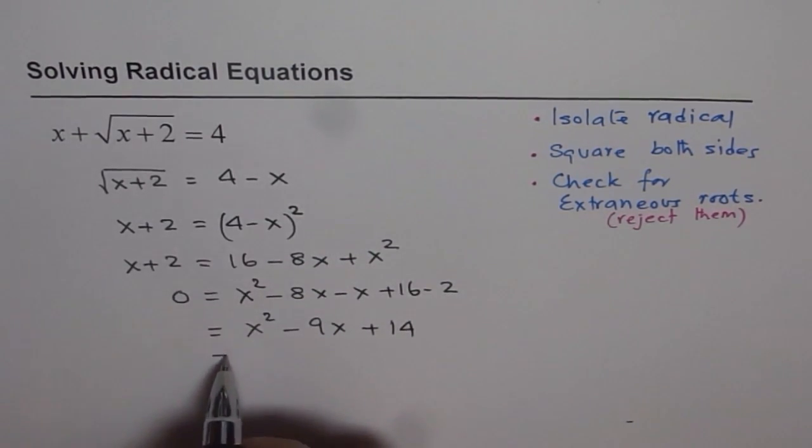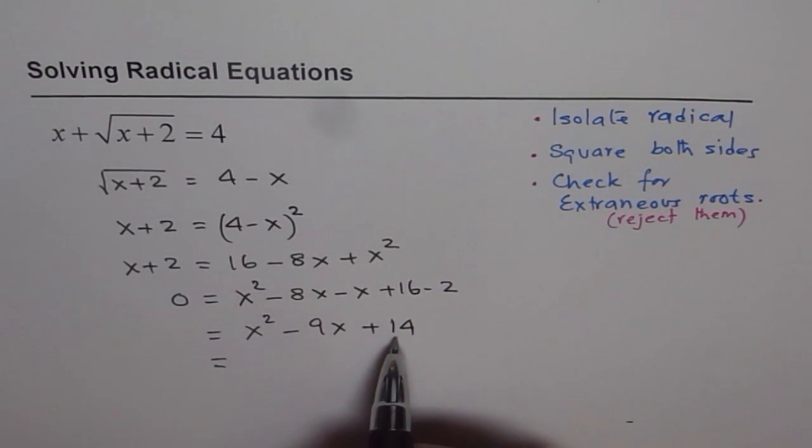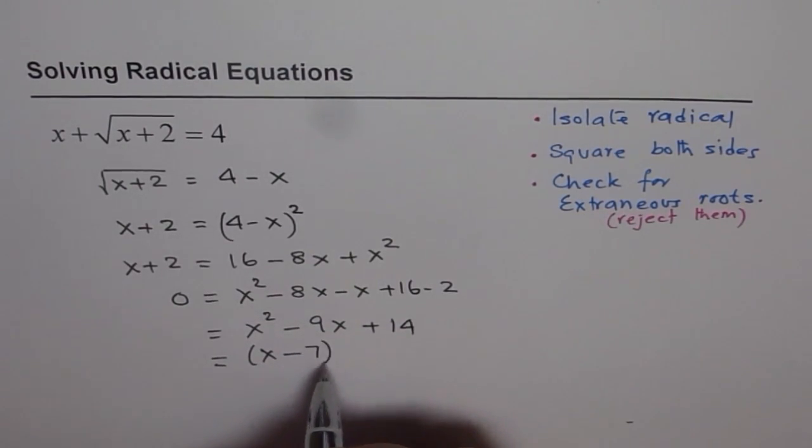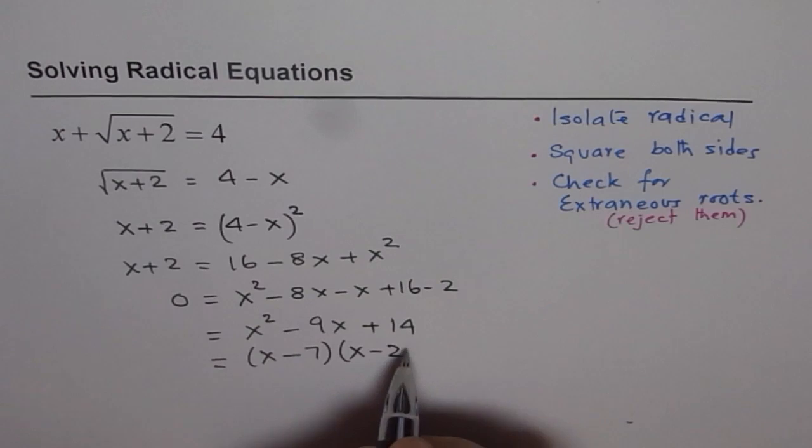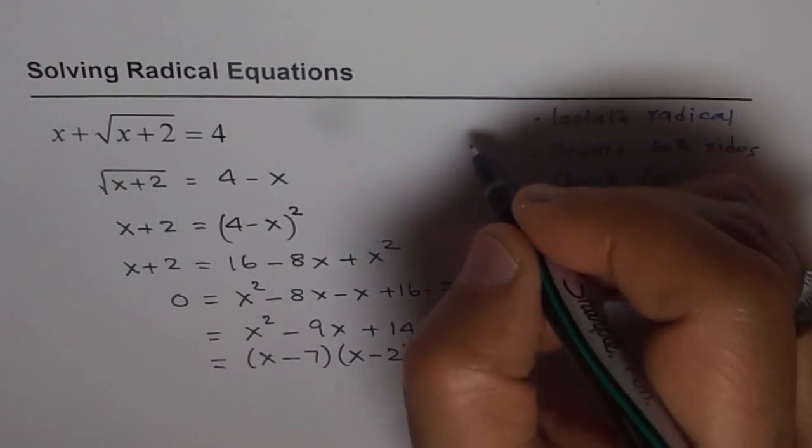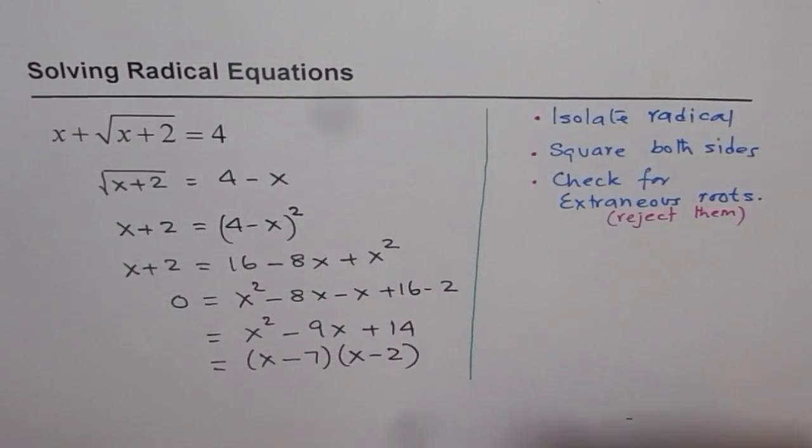Now, we can always factor this equation. Product is plus 14 and sum should be minus 9. So, the two numbers are x minus 7 and x minus 2. So that is equals to 0. Now, that gives us two solutions. So, now let's check for the solutions.